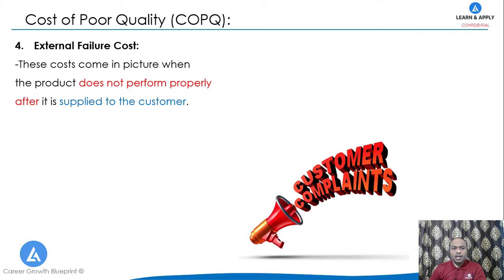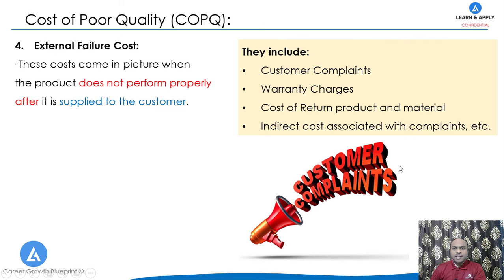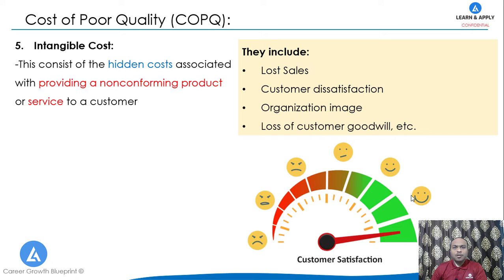The next cost of poor quality is external failure cost. This cost arises when the product does not perform properly after it is supplied to the customer. For example, this category includes costs of customer complaints, warranty charges, cost of return of products and materials, as well as indirect costs associated with complaints.